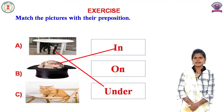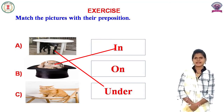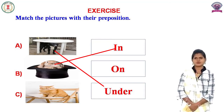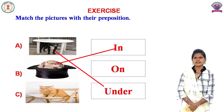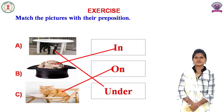Look at the third picture. Third picture में आपको क्या दिखाई दे रहा है? Where is the cat? Cat कहाँ है? तो cat जो है वो कुर्सी पर है, कुर्सी के उपर है। तो उपर के लिए हम कौन सा preposition लगाते हैं? On. देखिए 'on' कहाँ लिखा हुआ है — second word. तो third picture को second word 'on' के साथ मिला दीजिए।